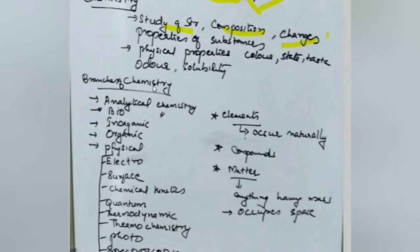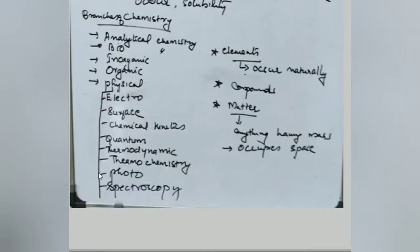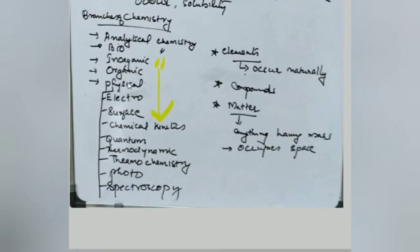Chemistry is again classified into many branches. The main branches are analytical chemistry, biochemistry, inorganic chemistry, organic chemistry, and physical chemistry. Physical chemistry is further sub-classified into electrochemistry, surface chemistry, chemical kinetics, quantum chemistry, thermodynamics, thermochemistry, photochemistry, and spectroscopy. At graduation and postgraduate level, each of these is studied as an individual subject.